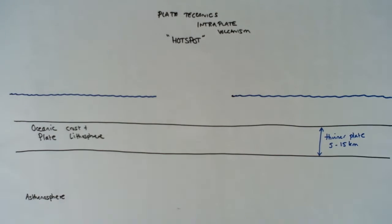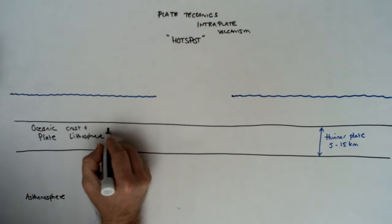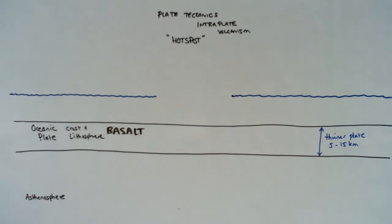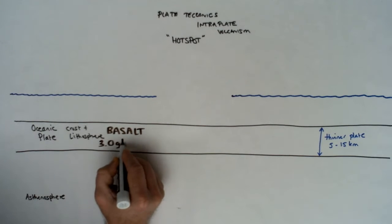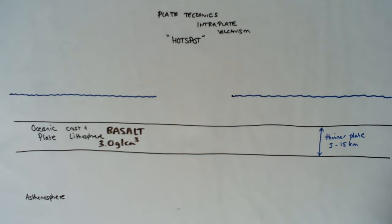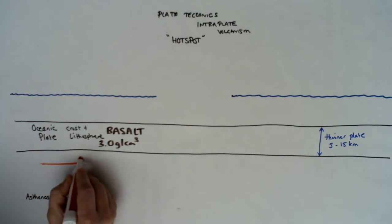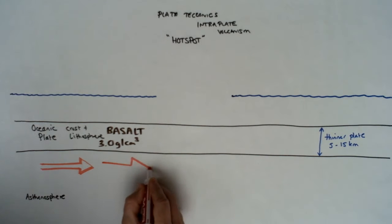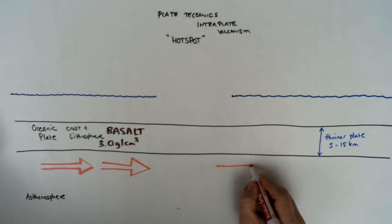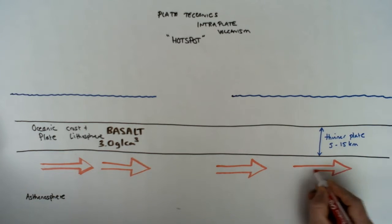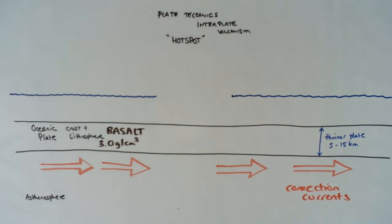And here we have the upper mantle and the lithospheric plate which is the crust and lithosphere combined. And this is an oceanic plate, so it's thin, between 5 and 15 kilometers thick. It is made or composed of basaltic rock, the igneous extrusive rock, the rock made from lava, which is about 3 grams per centimeter cubed. And we have also the convection currents in the asthenosphere that are continuously working to move the plate.